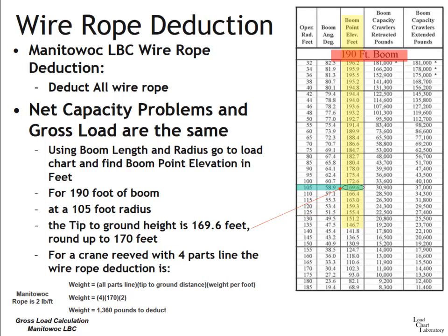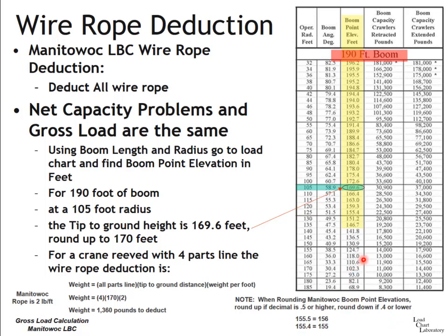Calculating wire rope deduction for the Manitowoc is simpler than for many other manufacturers. You don't need a range diagram or worry about deducting only excess wire rope — you simply deduct all wire rope. The numbers are provided in the chart. Regarding rounding boom point elevations: round up if the decimal is 0.5 or higher, round down if 0.4 or lower. For example, 155.5 rounds up to 156; 155.4 rounds down to 155.